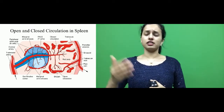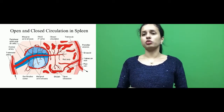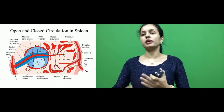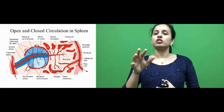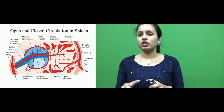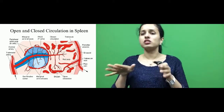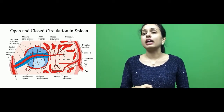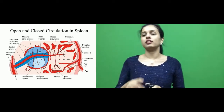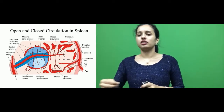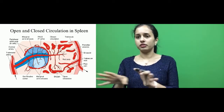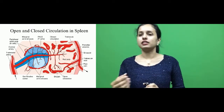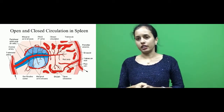Once it enters the red pulp, the circulation will be either open or closed. In the red pulp, the central arteriole again gives small straight branches called pensillar arterioles, which you can see in the red pulp area in the picture. From the central arteriole, these small, tiny, straight branches are the pensillar arterioles.